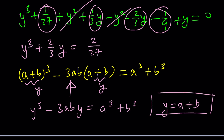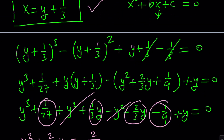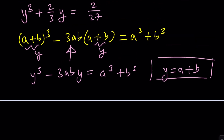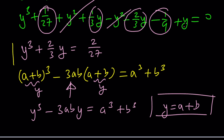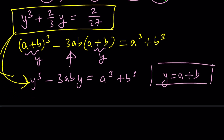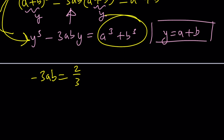Because I'm able to find y, from which I can find x — x and y are related. Here's how we proceed: we look at the coefficients of y and the constant term, and we compare them to our original equation. From there, we find the values of a and b. By comparing these two equations, you notice that the coefficient of y is two-thirds, which is supposed to be negative 3ab. So negative 3ab equals two-thirds, and the constant 2 over 27 equals a cubed plus b cubed.